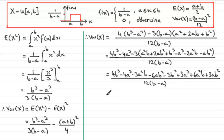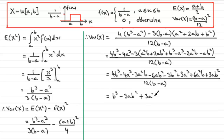Grouping terms on the numerator: b cubed terms give 4b cubed minus 3b cubed, which is b cubed. The ab squared terms give minus 6ab squared plus 3ab squared, which is minus 3ab squared. The a squared b terms give minus 3a squared b plus 6a squared b, which is plus 3a squared b. The a cubed terms give minus 4a cubed plus 3a cubed, which is minus a cubed. All over 12 times b minus a.